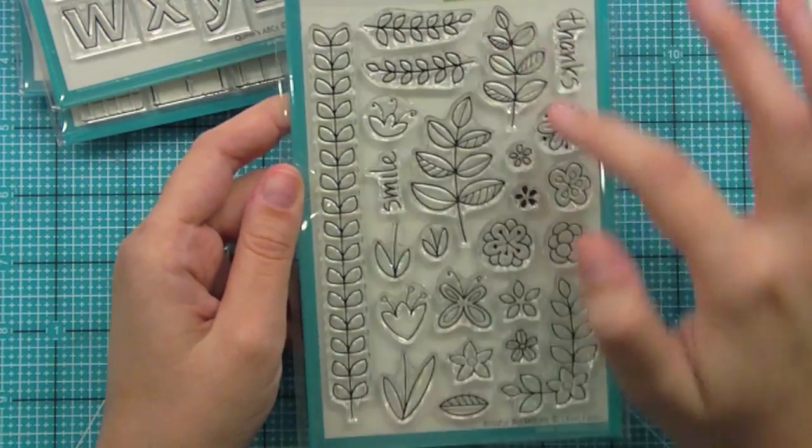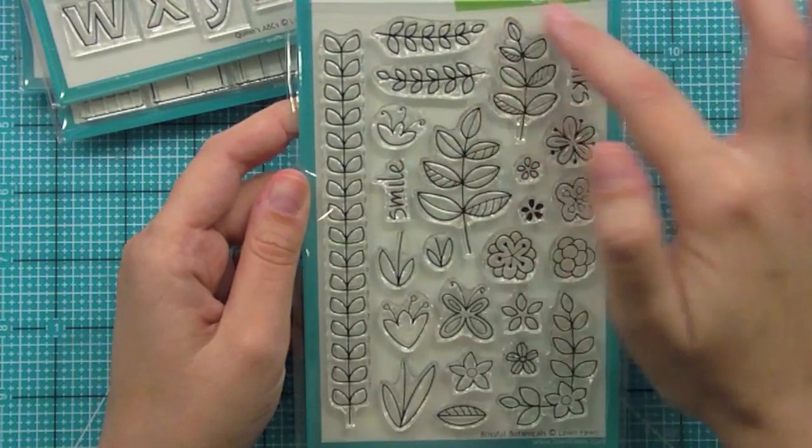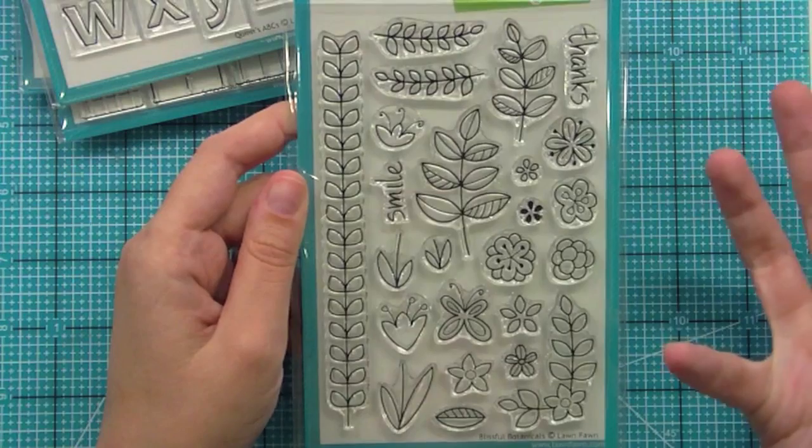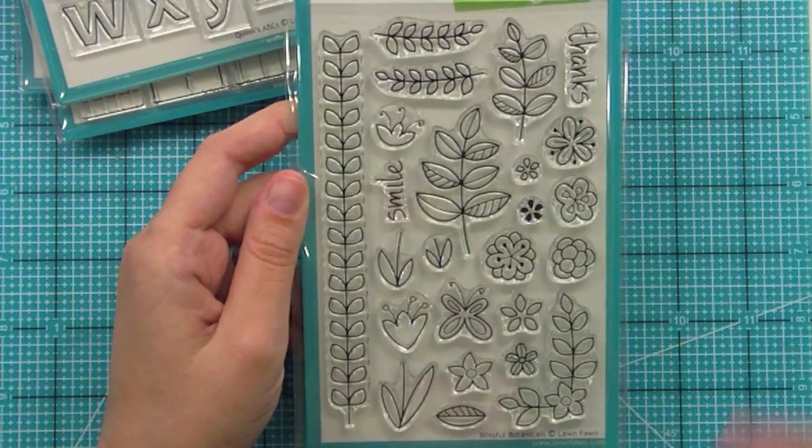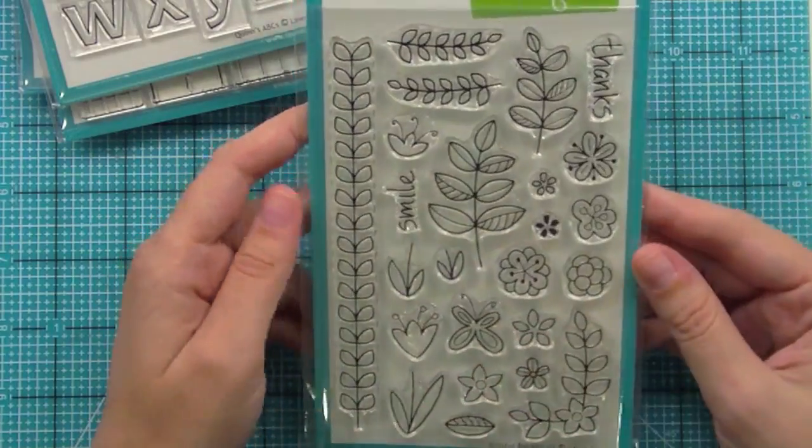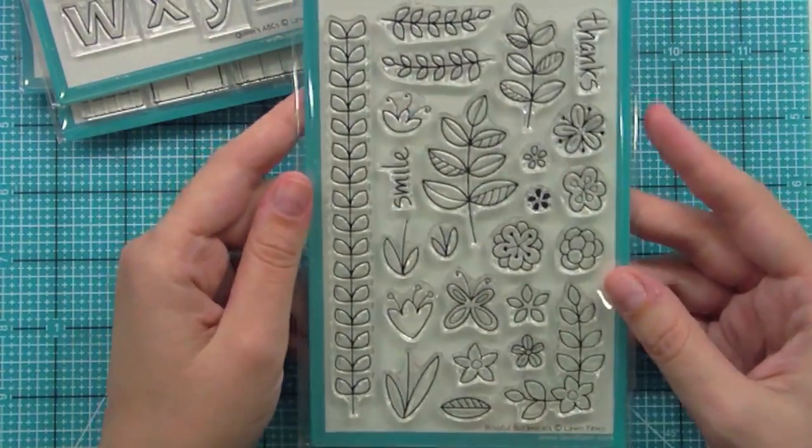And these leaves, just so pretty. You can add so much texture and just beautiful floral projects. Coloring and paper piecing are just stamped like in Versamark, really classy. So it's just a really fun set.